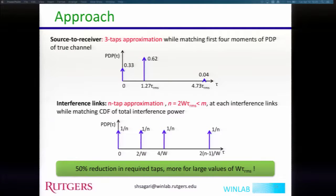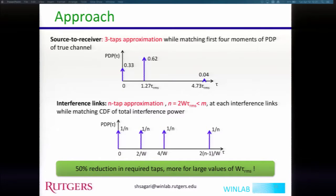For this emulation we used a PDP with equal gain and equally spaced taps. A similar approach used for the interference link can be applied to source-to-receiver as well, using just three taps with equal gain. We observed good performance for the source-to-receiver approximation. With these approaches we can achieve almost 50% reduction in required taps, and this reduction could be even more when we have really high W or high tau RMS values.